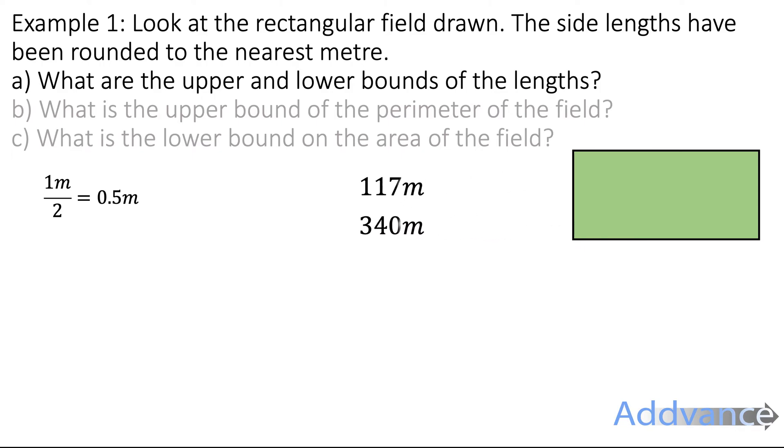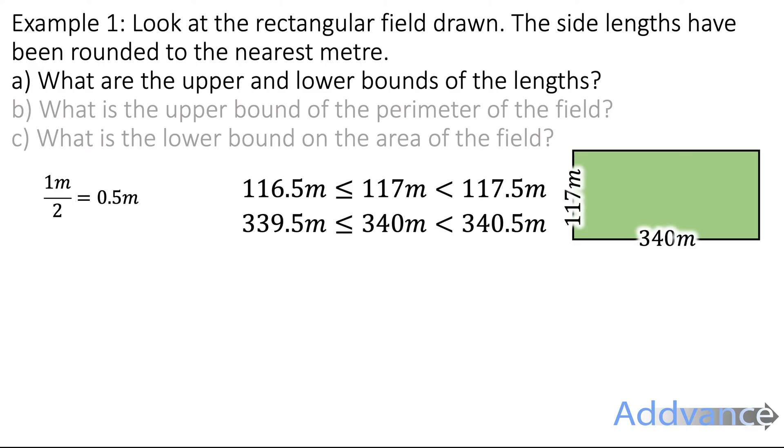So the lengths are here, we add or subtract 0.5 and we write it as an inequality. Here is the inequality. So 116.5 ≤ length < 117.5, and 339.5 ≤ 340 < 340.5 metres. Those are the upper and lower bounds of the lengths.